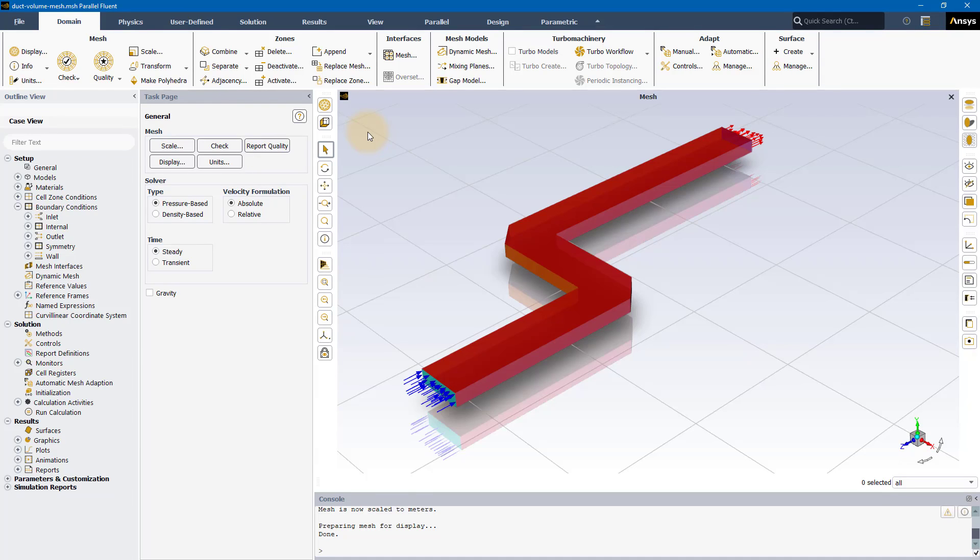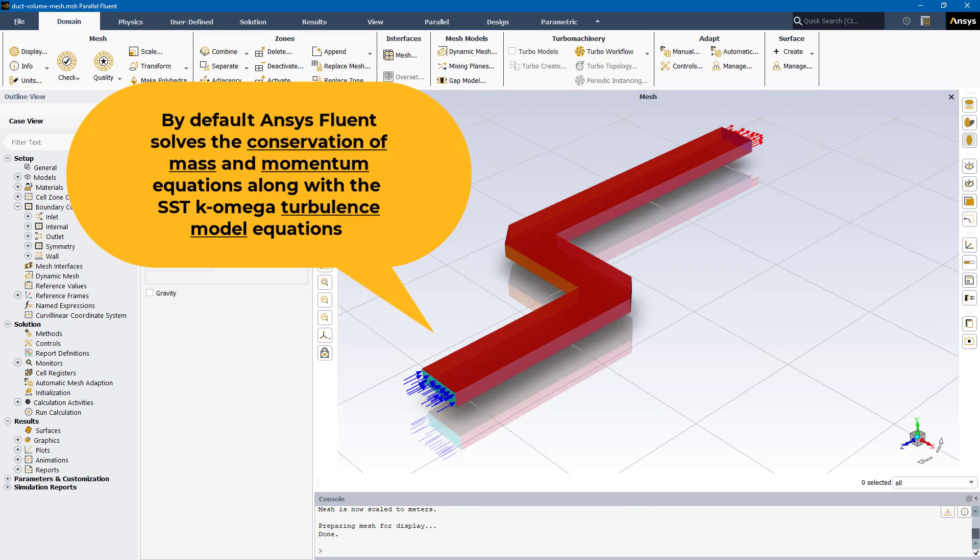I already have ANSYS Fluent open in solution mode with a mesh loaded in for demonstrating how to select and set up important physical models. By default, Fluent will always solve the conservation of mass and momentum equations and equations associated with default turbulence model, namely the two-equation SST K-Omega model. More on turbulence models a bit later in this video.